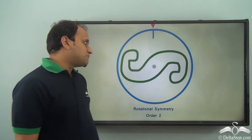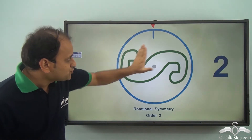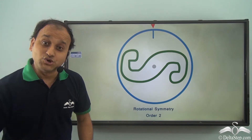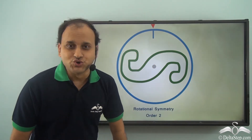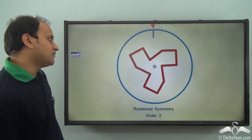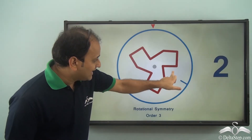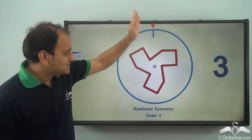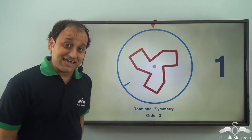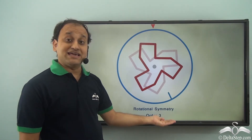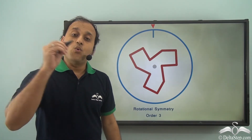For this particular object, when we rotate it, we see that one and then two times in one complete rotation it fits into itself. That is why the order of rotational symmetry for this figure is two. Now for this next figure, if we rotate it — first time it fits into itself, again it fits, and a third time it fits and the turn is complete. So the order of rotational symmetry is three, because three times it fits into itself before completing one full turn.